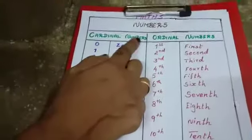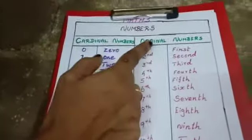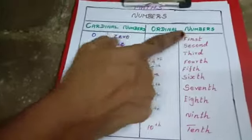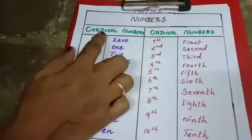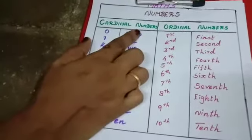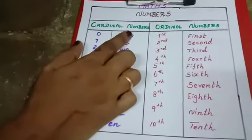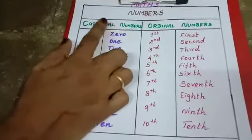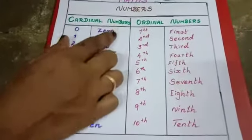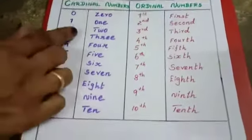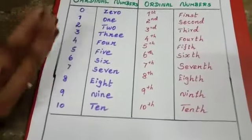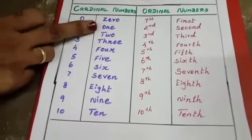Cardinal Numbers and Ordinal Numbers. Do you know the cardinal numbers? A cardinal number says how many of something there are, such as 1,